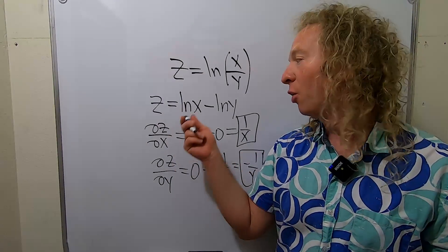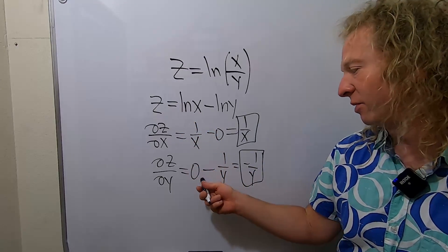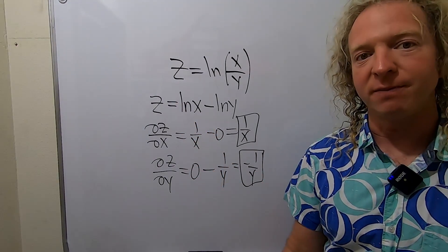When we took this partial, we treated this as a constant, so its derivative was 0. I hope this video has been helpful. Take care.